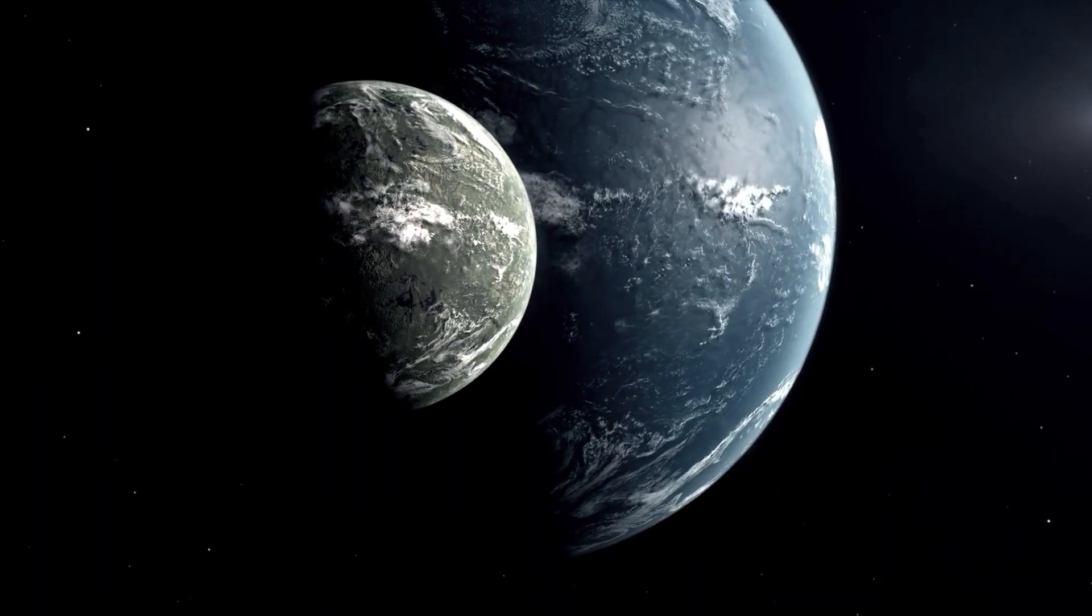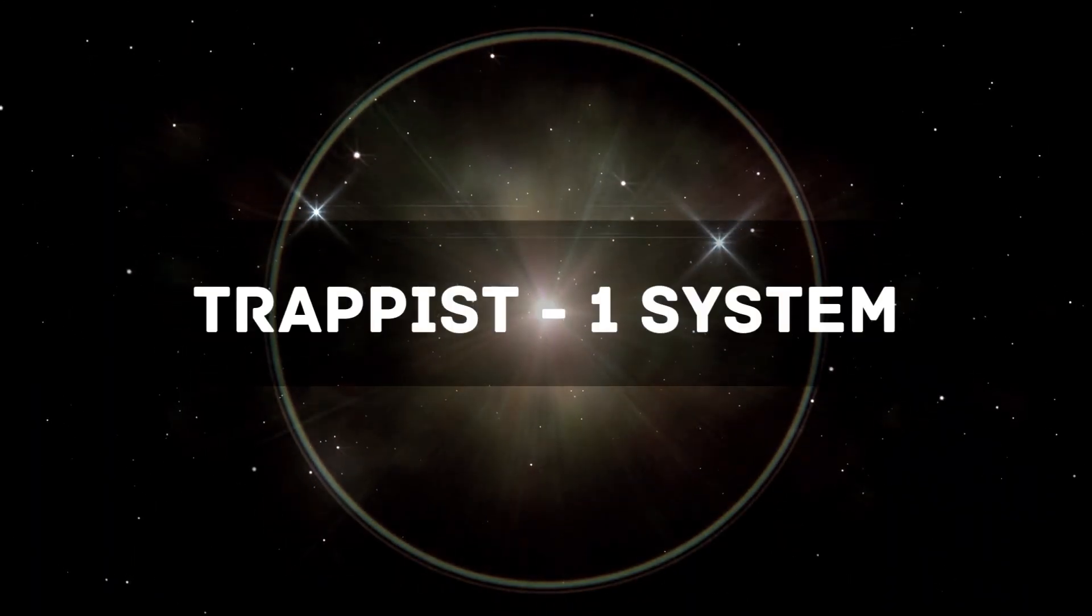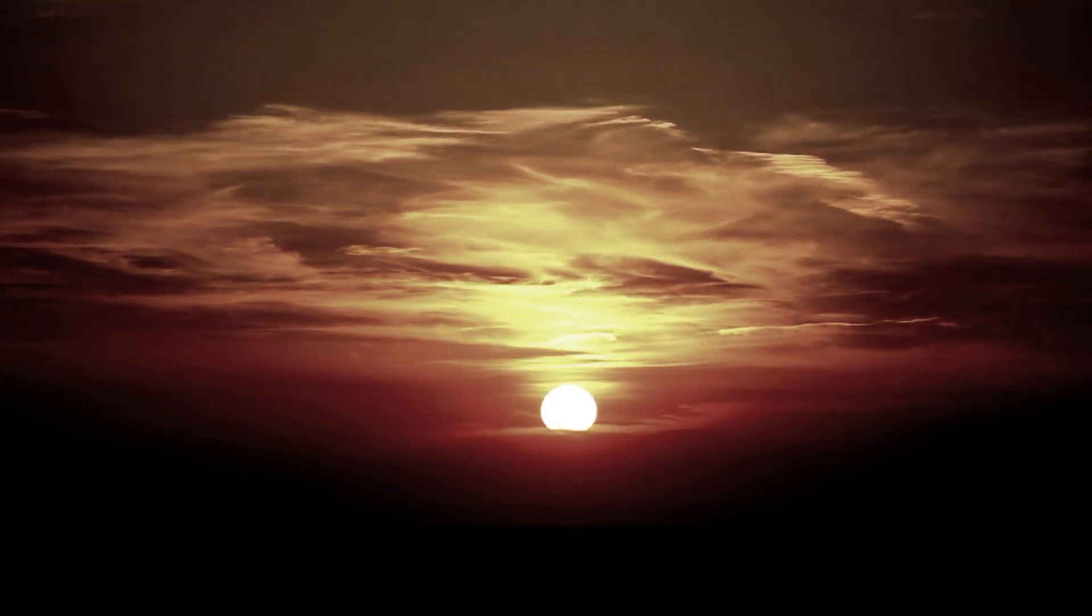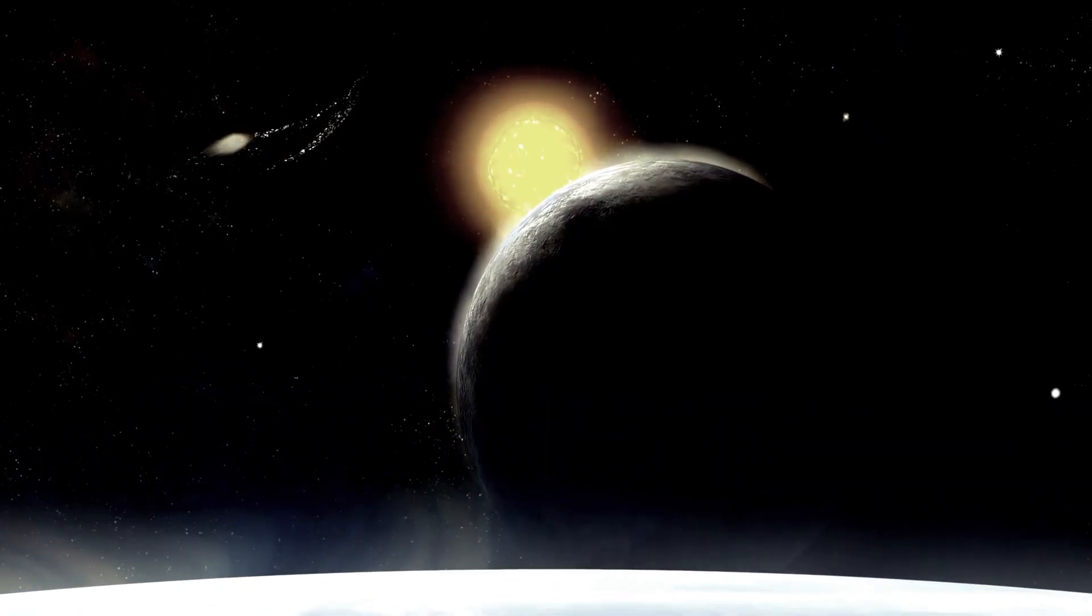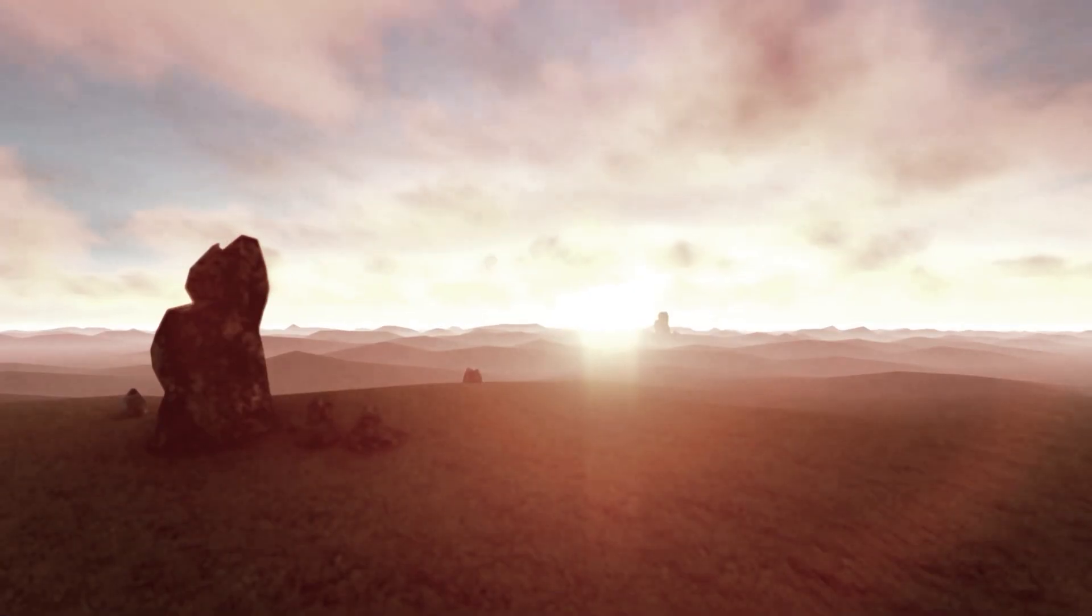This is what makes this super-Earth special. For example, the TRAPPIST-1 system, which also features a red dwarf as its host star, has a very high output of solar activity, possibly dissipating all life-sustaining atmospheres.